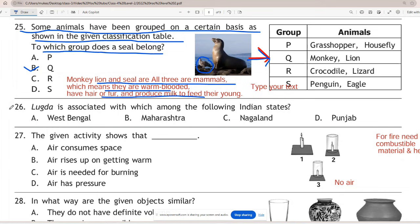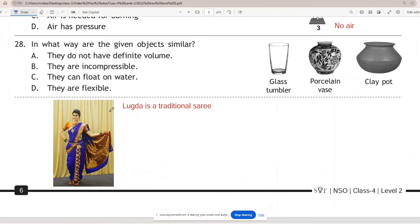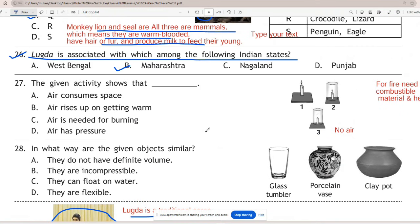Question 26: Lagda is associated with which among the following Indian states? Correct answer is B - Maharashtra. Lagda is a traditional saree, also known as the Nauvari saree, worn by women in Maharashtra, India.